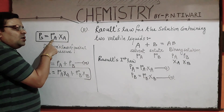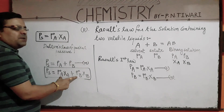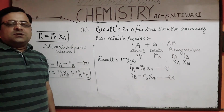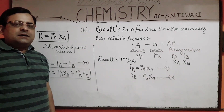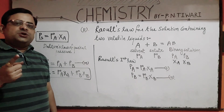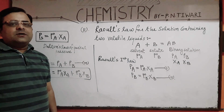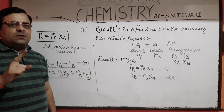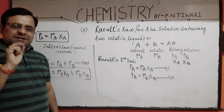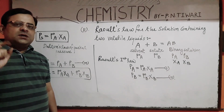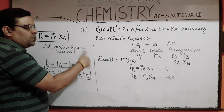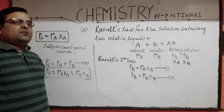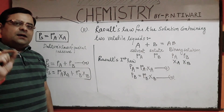This equation is applicable for solutions containing non-volatile solute, and the other equation is applicable for solutions containing two volatile liquids. Those solutions which perfectly obey Raoult's law over the entire range of temperature and concentration are called ideal solutions, while those which do not obey Raoult's law are called non-ideal solutions. In my next video lecture, I will explain the concept of ideal and non-ideal solutions.